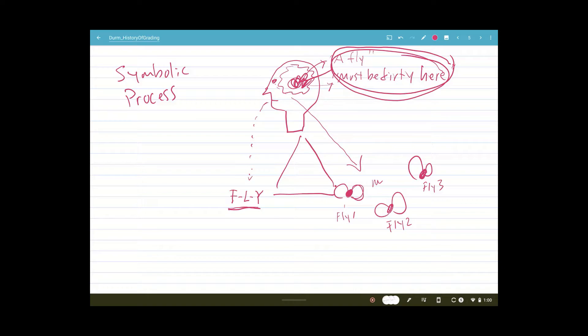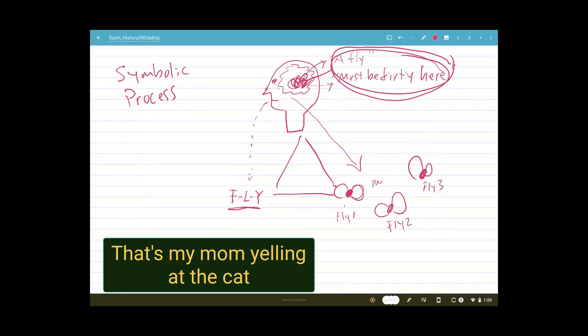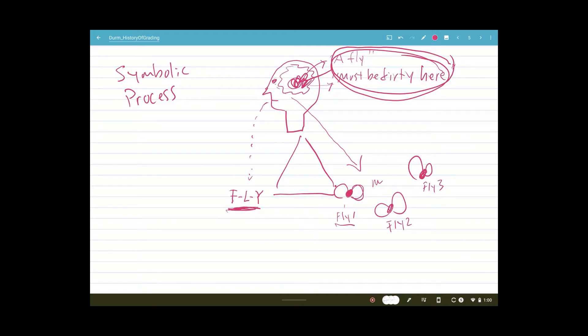I think I read somewhere that there's something like a hundred thousand different species of flies. And so just to say 'fly' is wrong, because fly one is not fly two is not fly three. Every fly is different, and then every circumstance in which they're observed is different, right? So then we could have...